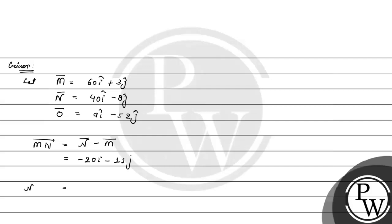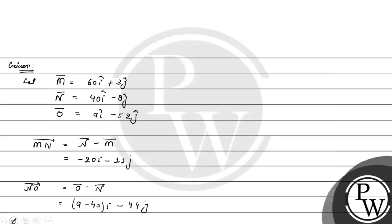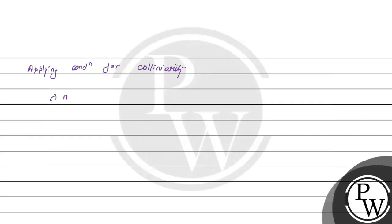Now let's find out the NO vector. So vector NO equals vector O minus vector N. For the i component we get a - 40, and for the j component we get -52 - (-8) = -52 + 8 = -44j. So NO vector is (a - 40)i - 44j. Now we apply the condition for collinearity: lambda times vector MN equals vector NO.